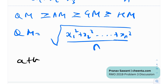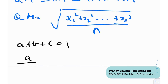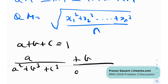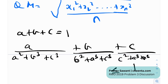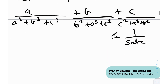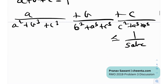Now let's come back to the problem. We are given that a + b + c = 1, and we need to prove: a/(a² + b³ + c³) + b/(b² + a³ + c³) + c/(c² + a³ + b³) ≤ 1/(5abc). There is neat symmetry involved in the problem, with the restriction a + b + c = 1.